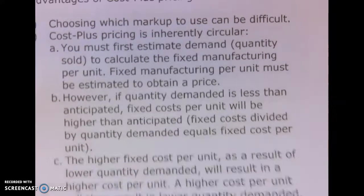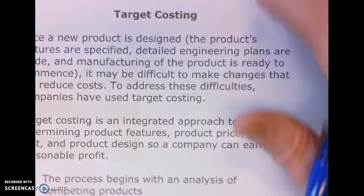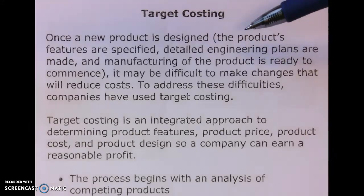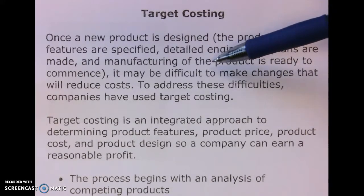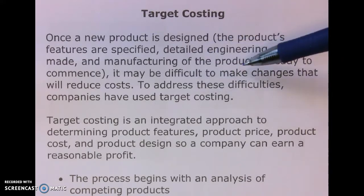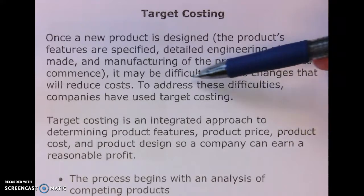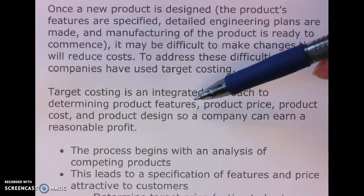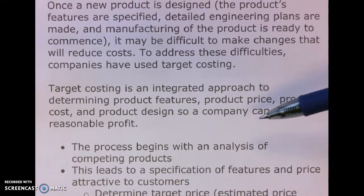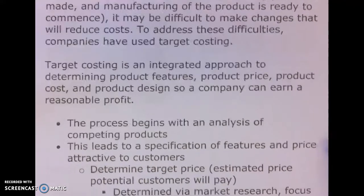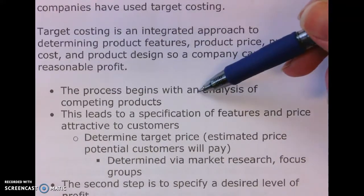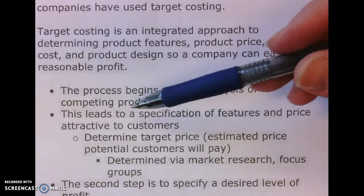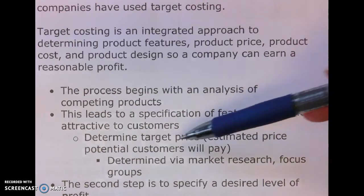Now let's talk about target costing. Once a new product is designed — features set and detailed engineering plans made — and it moves to manufacturing, it can be difficult to make changes that reduce cost because switching costs may be high. To address this, companies use target costing, which is an integrated approach to determine product features, product price, product cost, and product design in order to earn a reasonable profit.